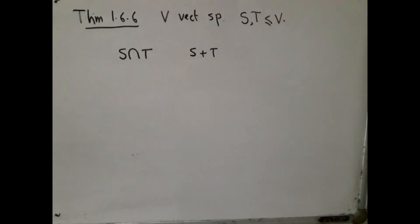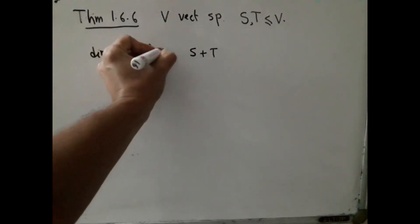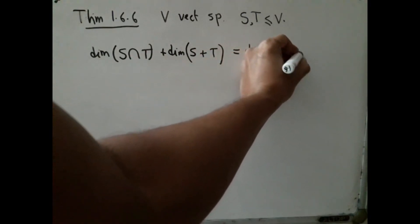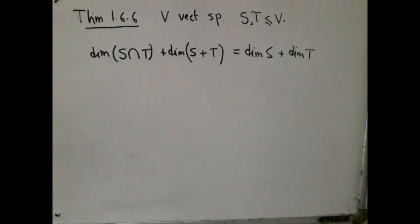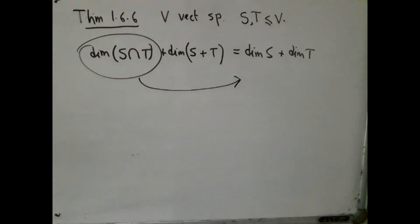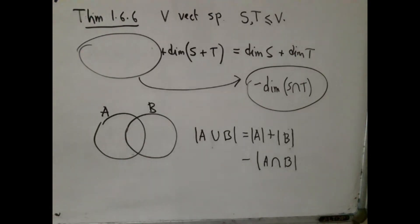Coming back to the theorem, this theorem relates their dimensions. It says that the dimension of S intersection T plus the dimension of S plus T equals the dimension of S plus the dimension of T. Now this theorem, as it has been stated, is a very typical example of a statement that deliberately presents things so you cannot see the obvious connection between this and something you already know. If we rearrange terms, you cannot fail to notice the connection to the very popular inclusion-exclusion principle, which says if A and B are any two finite sets...